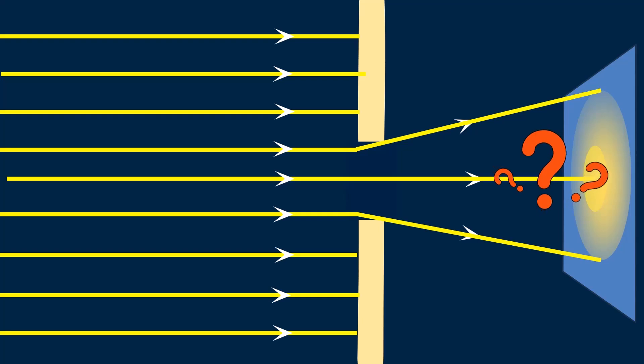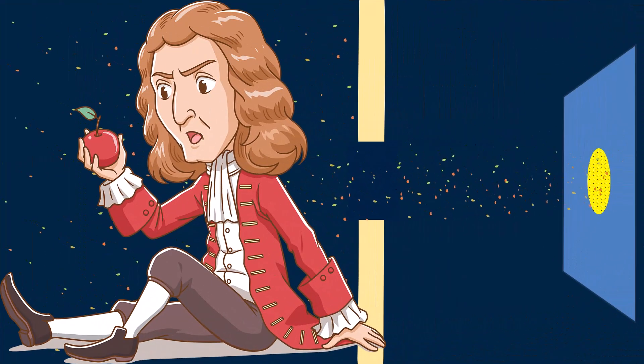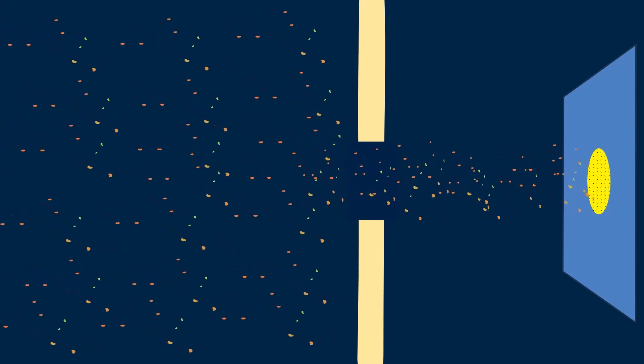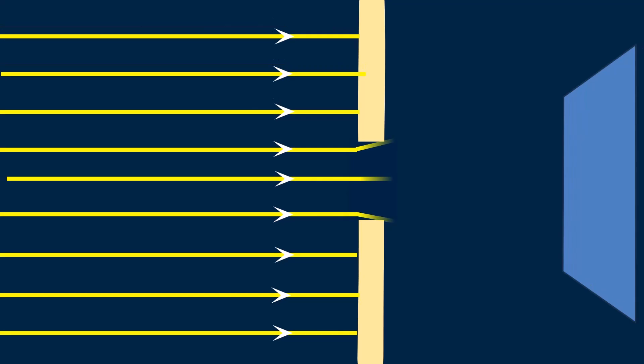How does this happen? Does light bend like that? According to Newton, light consists of tiny particles that travel in straight lines. If light were purely particle-based, the small hole would simply allow some particles to pass through while blocking others, resulting in a sharp image. But experiments show that light behaves differently, especially when it encounters obstacles or passes through small openings — it spreads out like this.